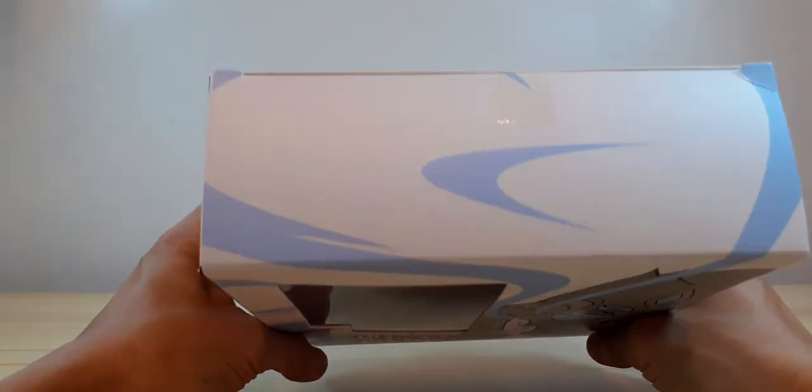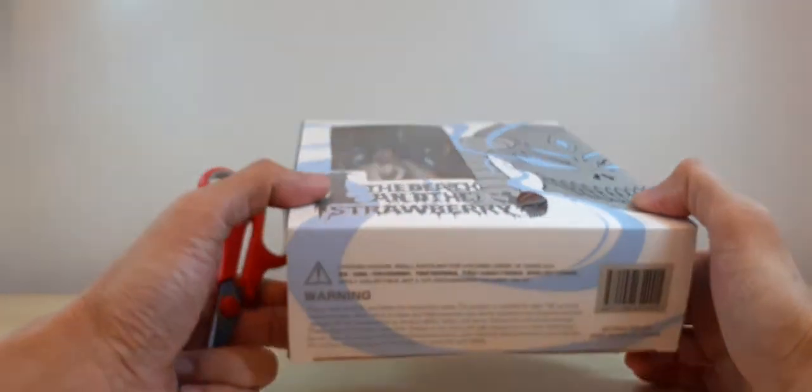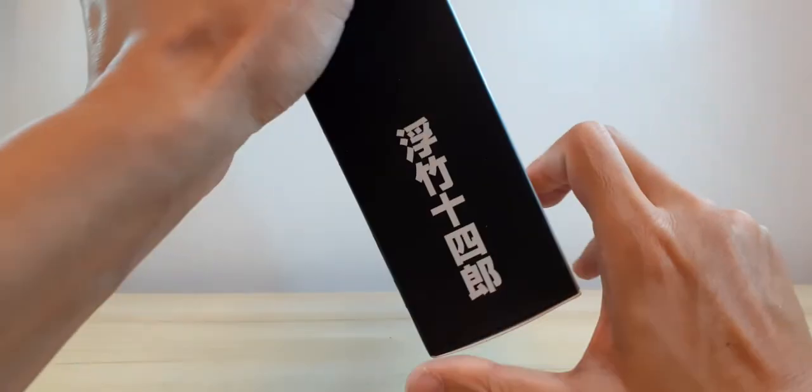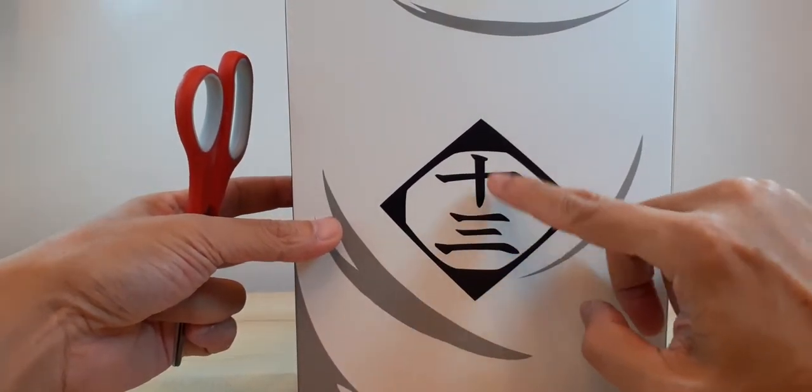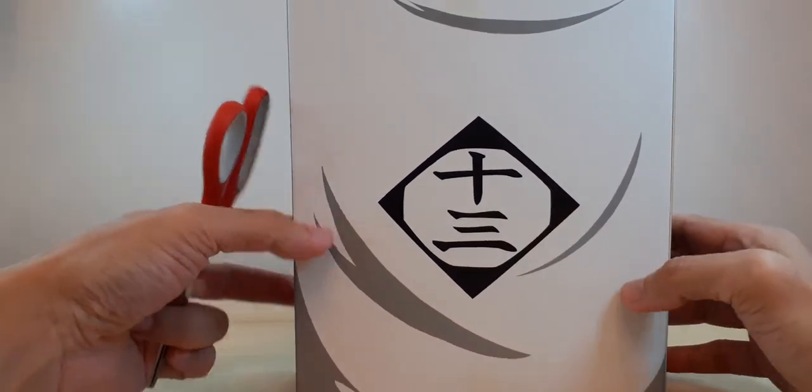Only Ichigo comes in the black box, but the side is black plain. There's a marking here and there's Ukitake's number 13 symbol at the back of his robe.